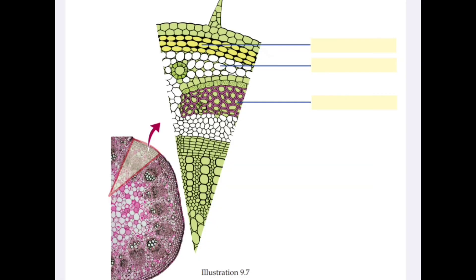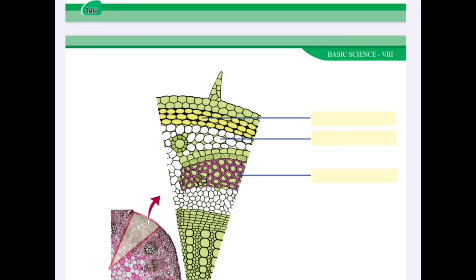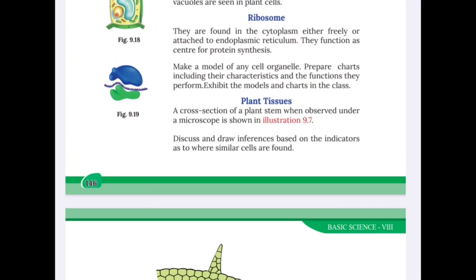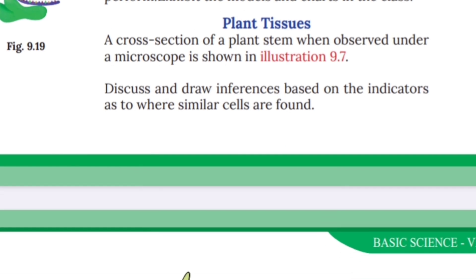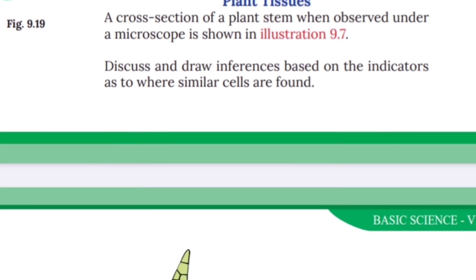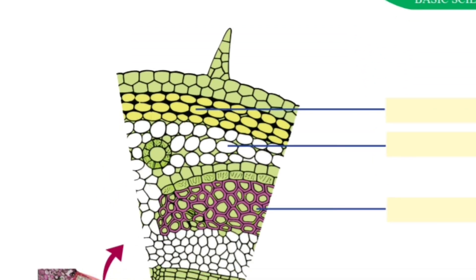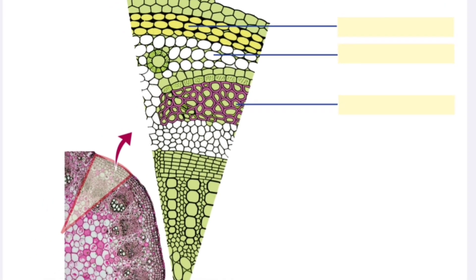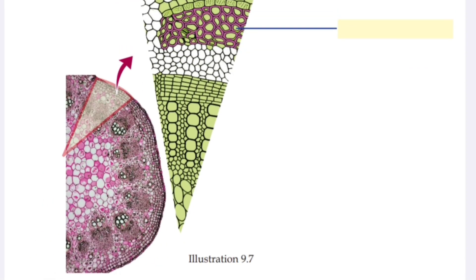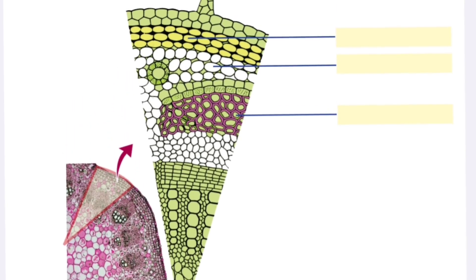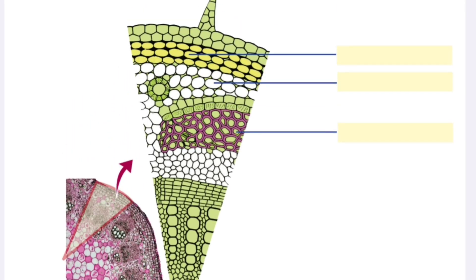In class we have studied cell organelles and how we study plant tissue. Here is the cross section of the plant, enlarged under the microscope. Here is the side view of the plant, with labeled parts of the plant.